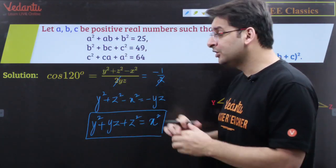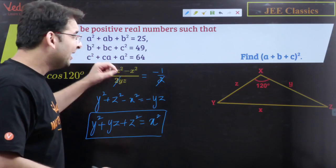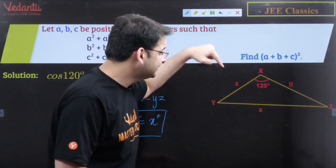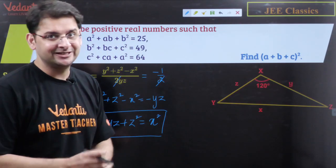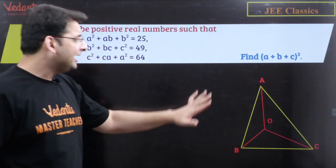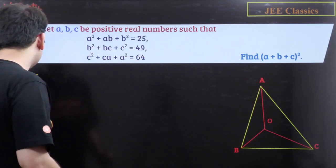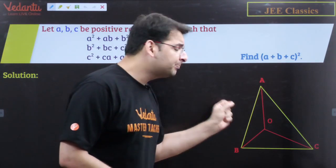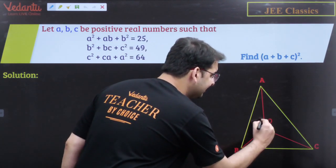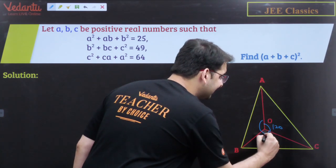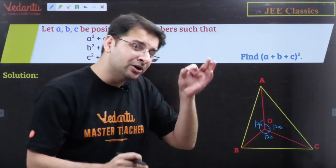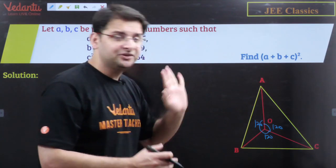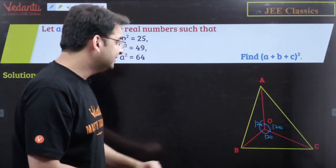Now let's move to the solution. Assume a triangle ABC and find a point O inside the triangle such that all three angles at O — angle AOB, angle BOC, and angle COA — are 120 degrees. Geometry guarantees there is exactly one such point inside triangle ABC. Let the lengths OA, OB, OC be small a, small b, and small c respectively.